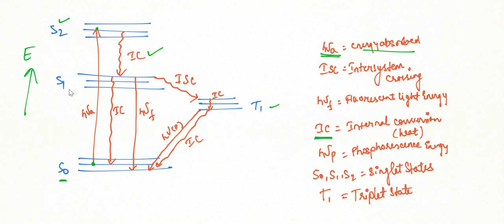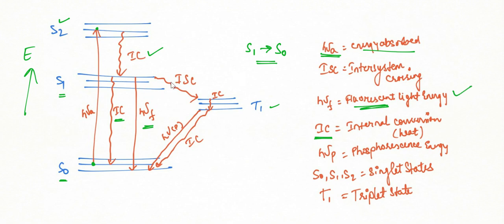After reaching the first excited state S₁, there are several possibilities. One is internal conversion (IC) again — radiating energy as heat. Another possibility is that energy is radiated as light: the transition S₁ → S₀ with emission of light is called fluorescence. A third possibility is that the electron undergoes inter-system crossing — moving from the singlet excited state to the lower-energy triplet excited state T₁.